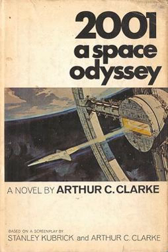In AD 1999, Dr. Haywood Floyd travels to the Moon's Clavius Base, where a scientist explains that they have found a magnetic disturbance designated Tycho Magnetic Anomaly 1, or TMA-1, in the crater Tycho. Excavation has revealed a large black slab, precisely fashioned to a ratio of 1:4:9, and therefore believed the work of intelligence. Visiting TMA-1, Floyd and others arrive just as sunlight falls upon it for the first time since it was uncovered. It emits a piercing radio transmission which the scientists determine is directed at one of the moons of Saturn — Iapetus. A mission, Discovery 1, is dispatched to Saturn.